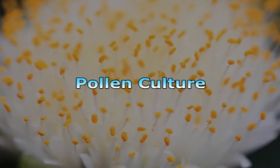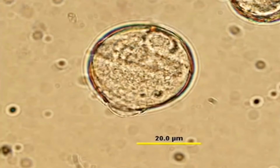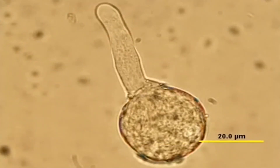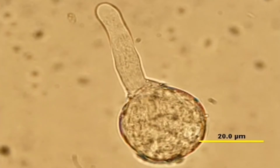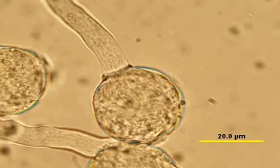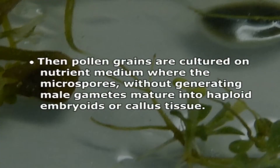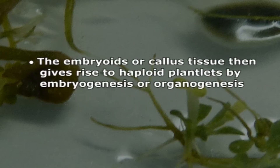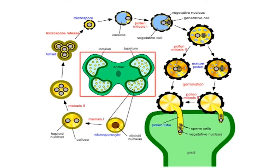Having understood what anther culture is, let us now move on to pollen culture. Pollen or microspore culture is an in vitro technique by which pollen grains, reasonably at the uninucleate stage, are taken out aseptically from the whole anther. The pollen grains are then cultured on nutrient medium where the microspores, without generating male gametes, mature into haploid embryoids or callous tissue. The embryoids or callous tissue then give rise to haploid plantlets by embryogenesis or organogenesis.